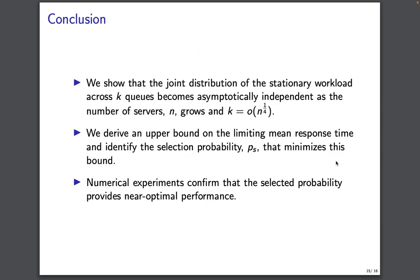To conclude, we showed that the joint distribution of the stationary workload across k queues becomes asymptotically independent as the number of servers and k is in order of n to the 1/4. We derived an upper bound of the limiting mean response time and identified the selection probability PS that minimized this bound. We ran experiments and numerical studies to validate our results. Thank you.